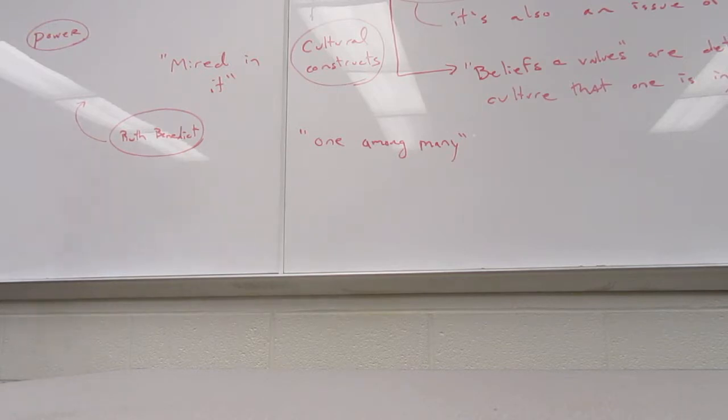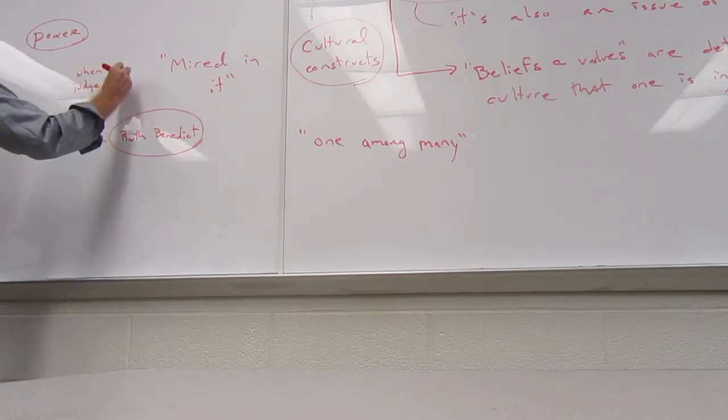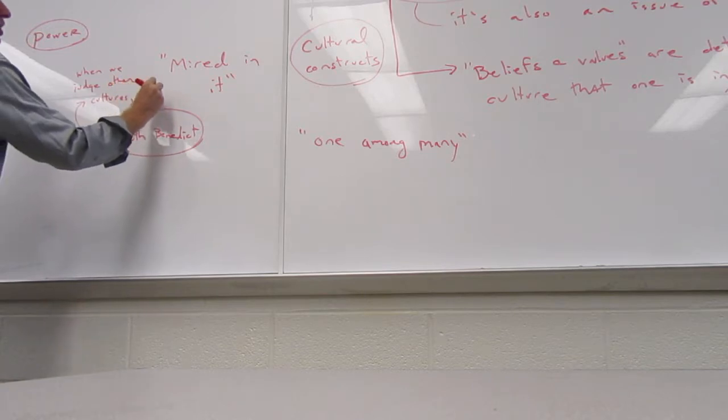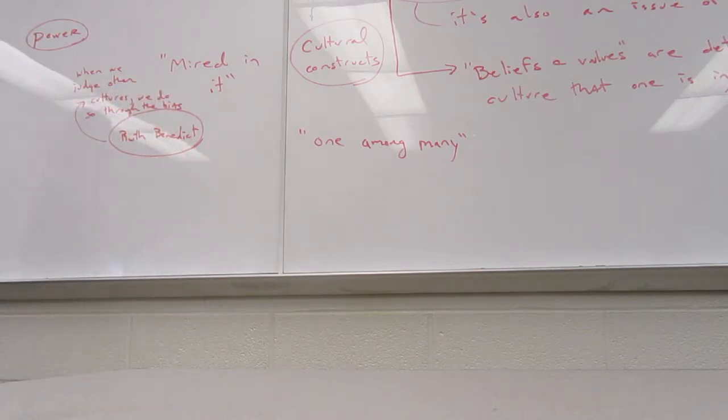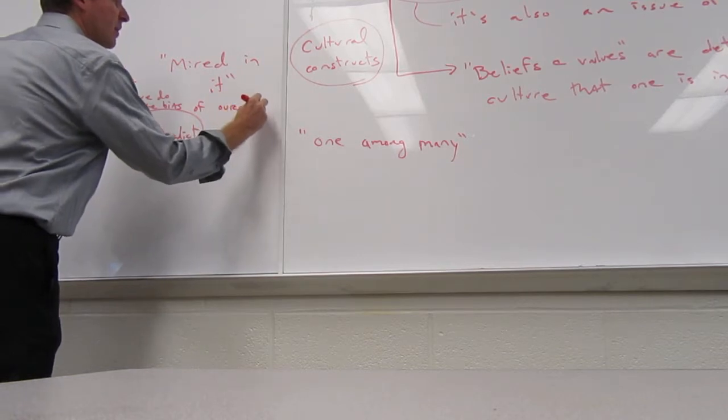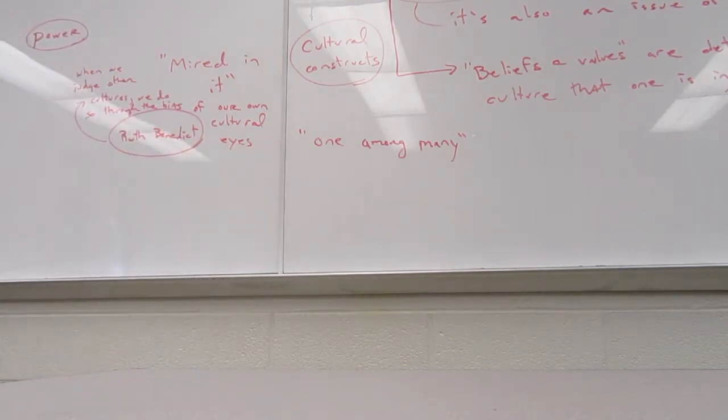Ruth Benedict's essay is one of those two essays. She argues for cultural relativism and contends that whenever we judge other cultures, when we judge other cultures, we do so through the bias of our own cultural eyes. In other words, when we judge other people's practices and beliefs to be inherently wrong, we are implicitly assuming that our own ways happen to be right.